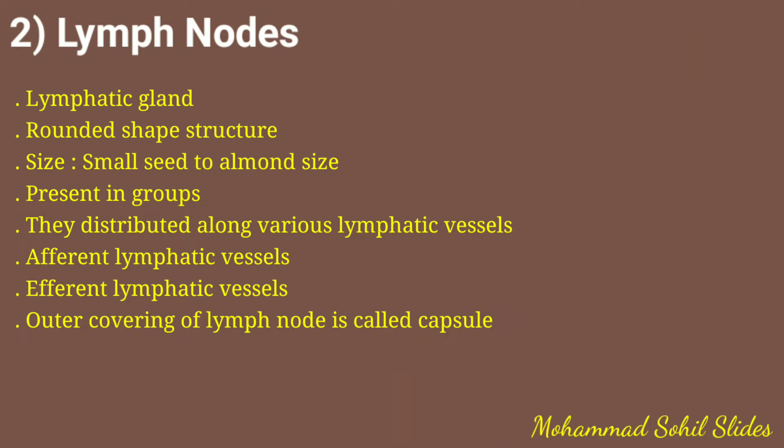These compartments contain lymphatic tissue consisting of lymphocytes and other cells. Within the lymph node, rounded structures called lymphatic nodules are present, which contain dense aggregations of lymphatic tissue.